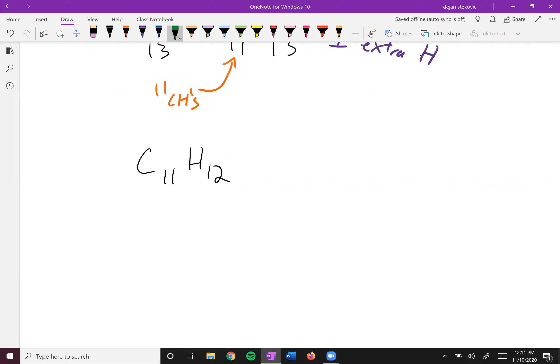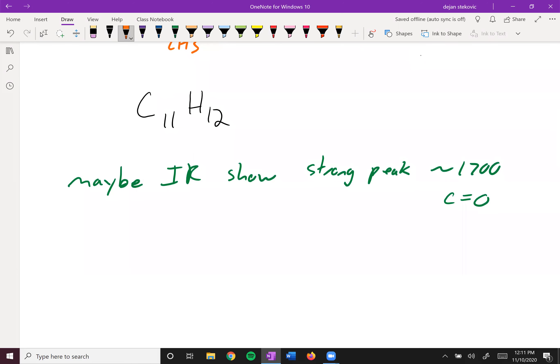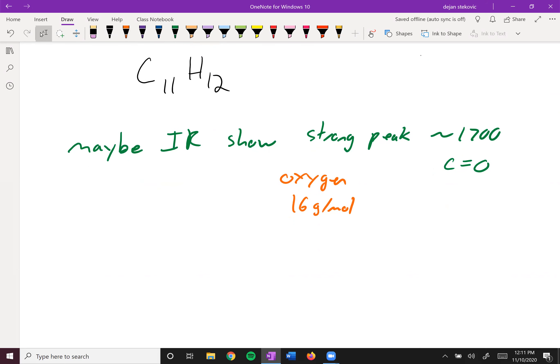And so maybe you take a look at some other data, and maybe you take a look at IR spectra. And your IR spectra shows a strong peak at approximately 1700. And so that means that we probably have a carbonyl. We have a carbonyl, which means that we have an oxygen. And oxygen weighs 16 grams per mole. And so if you're thinking about what could be composed of carbons and hydrogens to make up 16 grams per mole, you're thinking of here a CH4. A carbon weighs 12, hydrogen weighs one each, that'll add up to 16. So what you do is you take your formula...